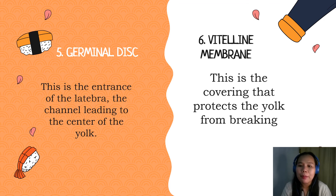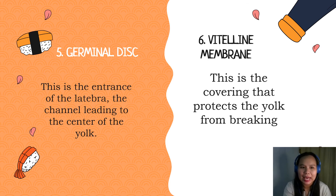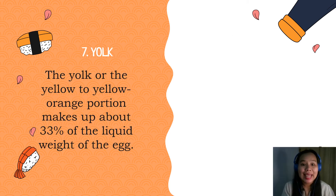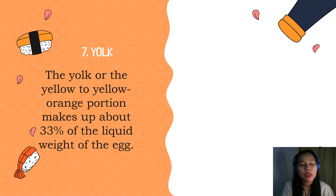Next, we have the vitaline membrane. This is the covering that protects the yolk from breaking. Lastly, we have the egg yolk. The yolk, or the yellow to yellow-orange portion, makes up about 33% of the liquid weight of an egg.